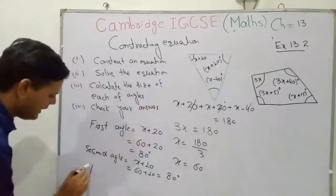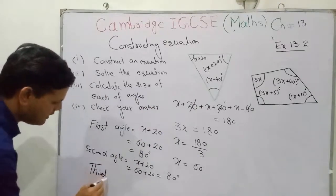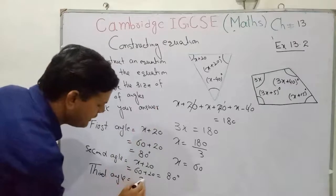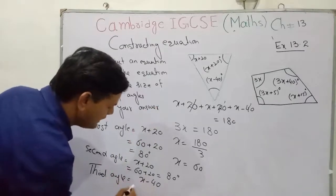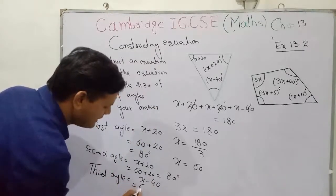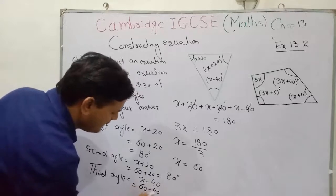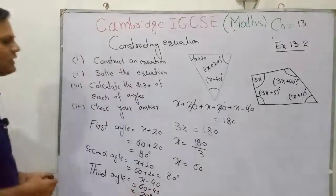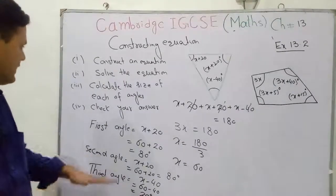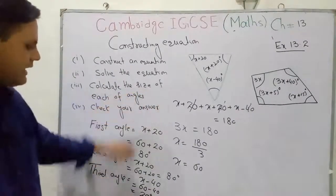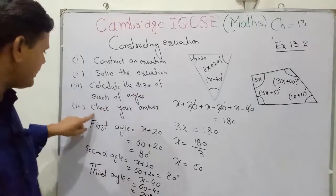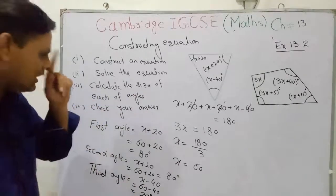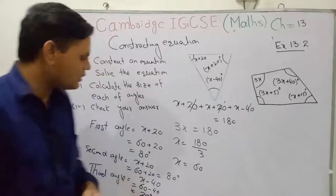The third angle is x − 40. The value of x is 60, so 60 − 40 = 20°. Part three — calculate the size of each angle — is done. Now part four: check your answer.